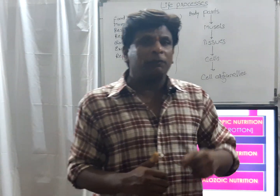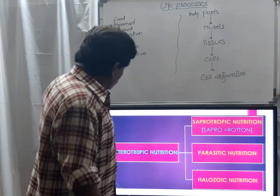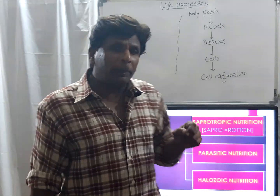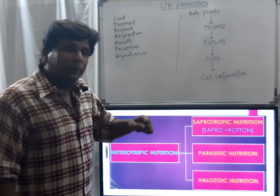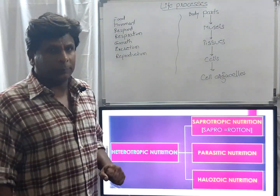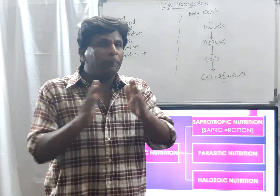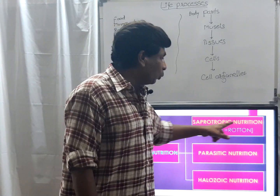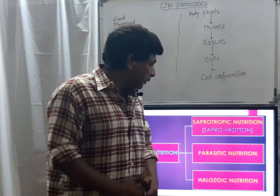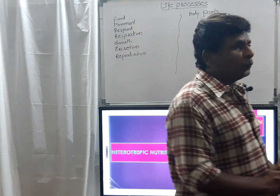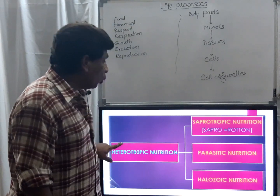We have studied the details of autotrophic organisms already. Now we are going to go deeper into heterotrophic nutrition organisms. In heterotrophic nutrition, organisms can be divided into three parts: first is saprotrophic nutrition, second is parasitic nutrition, and third is holozoic nutrition.